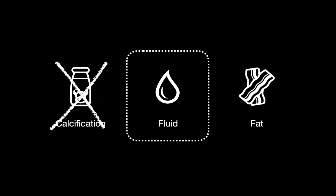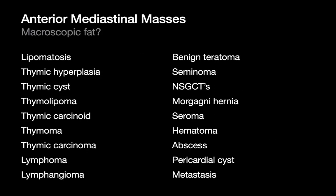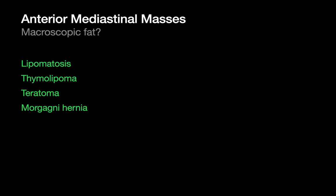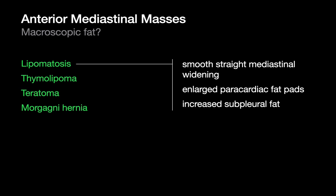So fluid is helpful. How about fat? Fat is helpful too. There are only four diagnoses on this list that contain macroscopic fat, and these four diagnoses look very different from each other. Once you've identified macroscopic fat, you'll have a pretty easy time figuring out which of the four diagnoses applies. Mediastinal lipomatosis is just an accumulation of fat within the anterior mediastinum, usually with straight, clean margins on both sides, and you'll usually find other areas of increased fat accumulation around the heart or along the pleura.